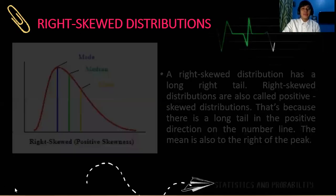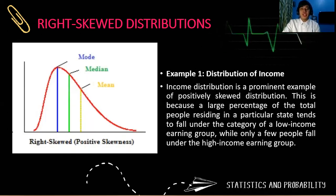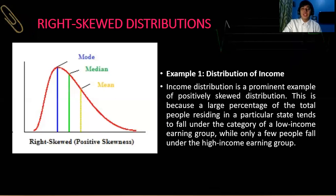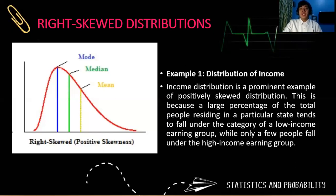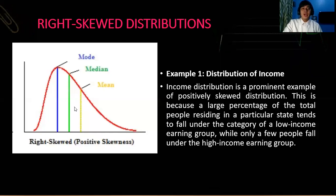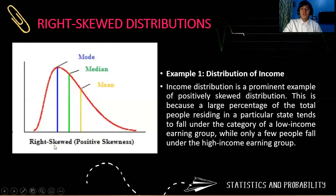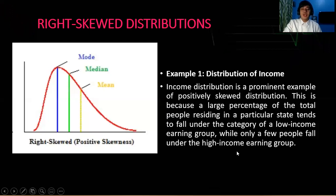Let's have a practical example. Income is a prominent example of positive-skewed distribution. This is because a large percentage of the total people residing in a particular area or community tends to fall under the category of the low-income earning group. So in the Philippines, we have a right-skewed distribution because many have low or middle income, and only few people fall under the high-income earning group.